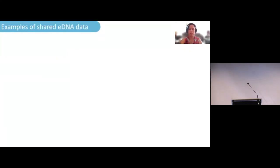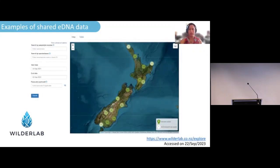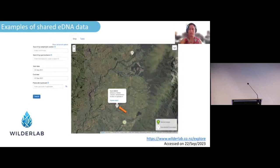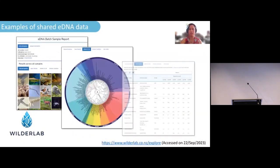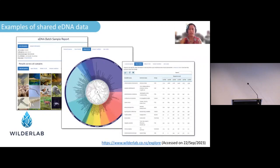Now I would like to show you a few beautiful examples of shared eDNA data. One is from WilderLab in New Zealand — if you click on the map it takes you to a single sampling point where you can access the species list in pictures, charts and spreadsheets. Here's another similar database from Japan called the Anemone database. There are samples collected from all over Japan and all this data is publicly available, including raw sequencing data.